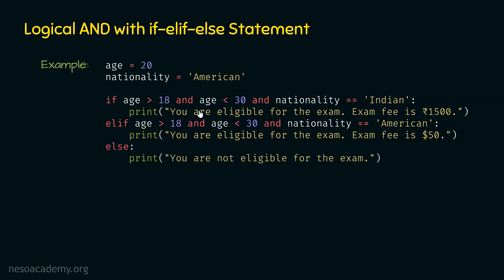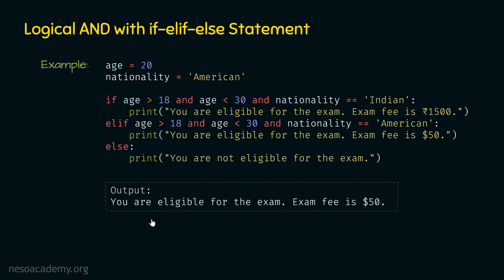We know that the age of the person is 20 and nationality is American. Therefore, the elif conditions are satisfied. Hence, you are eligible for the exam and exam fee is $50 will be printed. The output of this program is: you are eligible for the exam, exam fee is $50. I hope the concept of logical AND with if-elif-else statement is also clear.